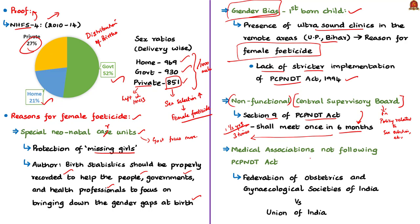The Supreme Court has continuously reminded medical associations since 2002 about the need to follow the PCPNDT Act. In the Federation of Obstetrics and Gynecological Societies of India (FOGSI) versus Union of India case, the Supreme Court directed FOGSI to follow the PCPNDT Act. If this act is properly followed, cases of female feticide can automatically be reduced. These are some key reasons for female feticide that can be mentioned in a main exam answer.